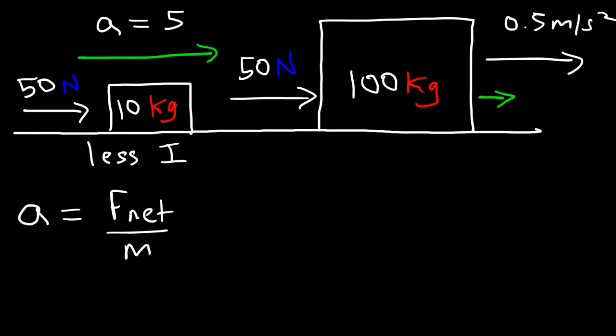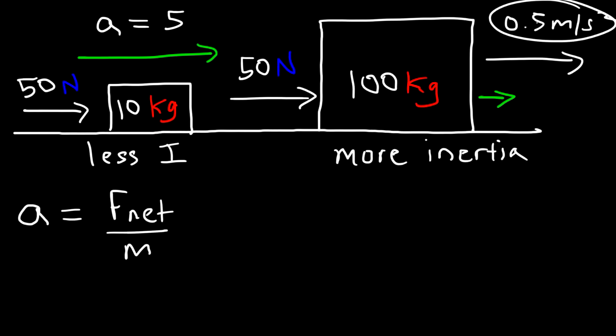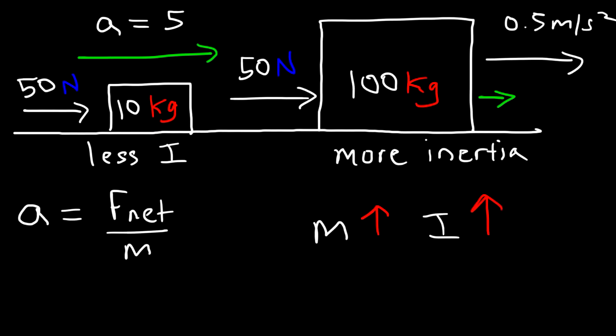What this tells us is that the lighter object has less inertia because it was so easy to accelerate with a small amount of force. The larger object has more inertia because even though we applied the same amount of force, the acceleration of the object is a lot smaller. So whenever you increase the mass of an object, the inertia of that object will increase — inertia is proportional to mass. It's harder to change the motion of a heavy object compared to a light object.